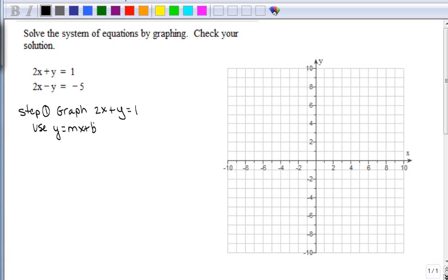And how I'm going to do that is I'm going to solve for y. To solve for y, I need to subtract 2x from both sides. So I'm going to get y equals negative 2x plus 1.